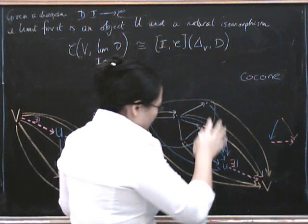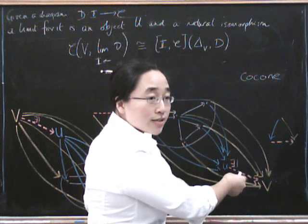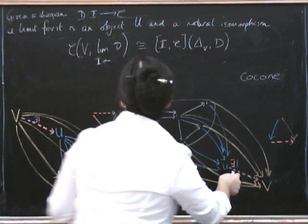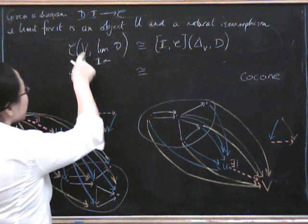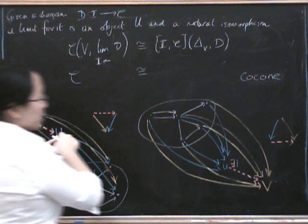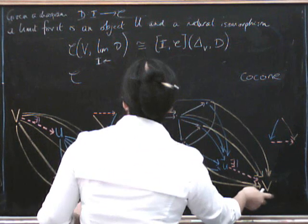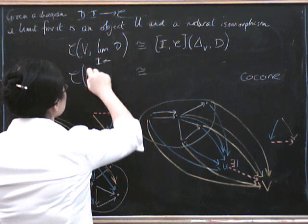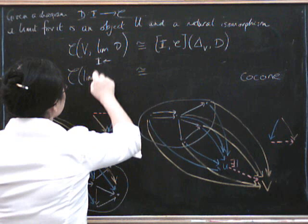So again, we've got to think, for every cone, there exists a unique morphism. That means that there's a bijection between cones and morphisms somehow. So first of all, let's write down the morphisms. Now previously, it was morphisms from some object V to the vertex, which is this limit. Now, it's morphisms from this limit to the vertex V. So it's going to be morphisms from the limit. From the limit.